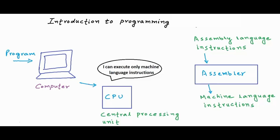But wait — didn't we say that the CPU, which has to execute all instructions, will understand only machine language instructions? So how can we write a program in assembly language? Well, you can write your logic in assembly language and then pass the assembly language instructions to a program named assembler. This assembler will generate machine language instructions corresponding to the assembly language instructions. Basically, someone wrote a program named assembler, and with it programmers could write more readable instructions in assembly language. But there was a problem with assembly language — assembly language is strongly mapped to machine language. It's just that some binary codes in machine language become keywords in assembly language.